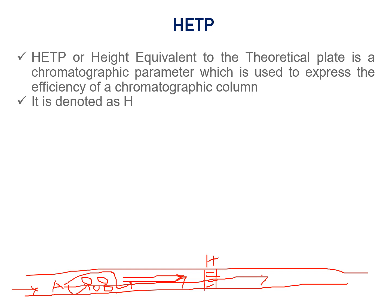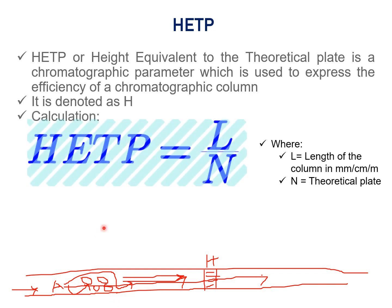Now we will learn how HETP is calculated. HETP is equal to L divided by N, where L is the length of the column and N is the number of theoretical plates, which represents the efficiency of the column. Higher the column efficiency, higher the N value, and consequently lower the value of HETP — lower the HETP, better is the column.